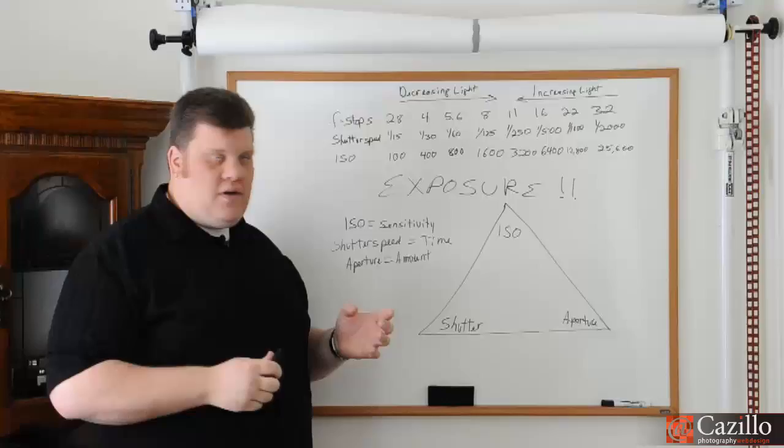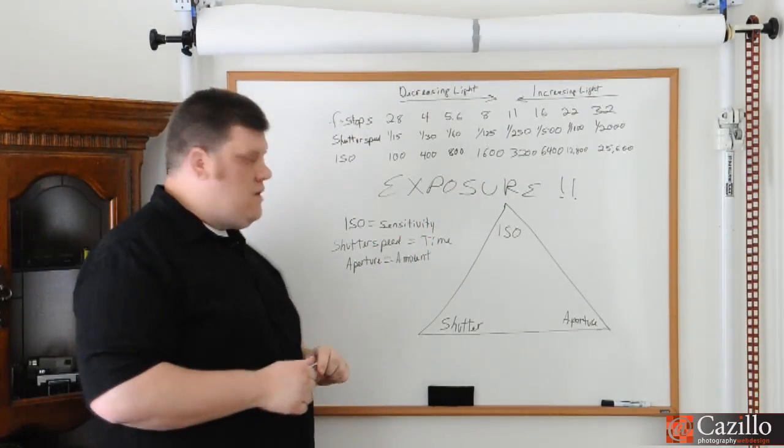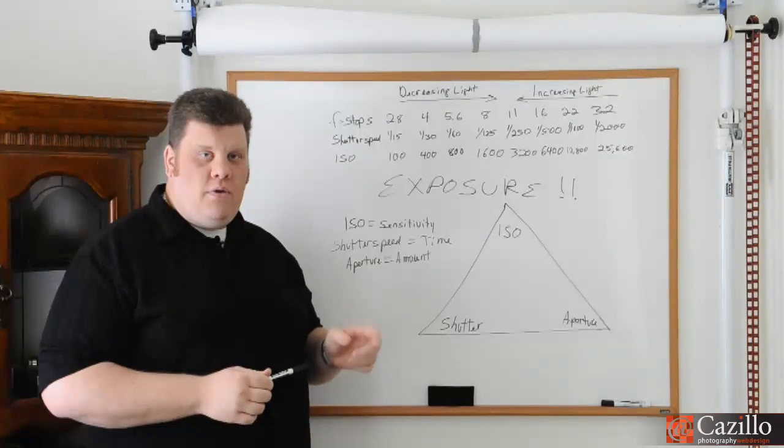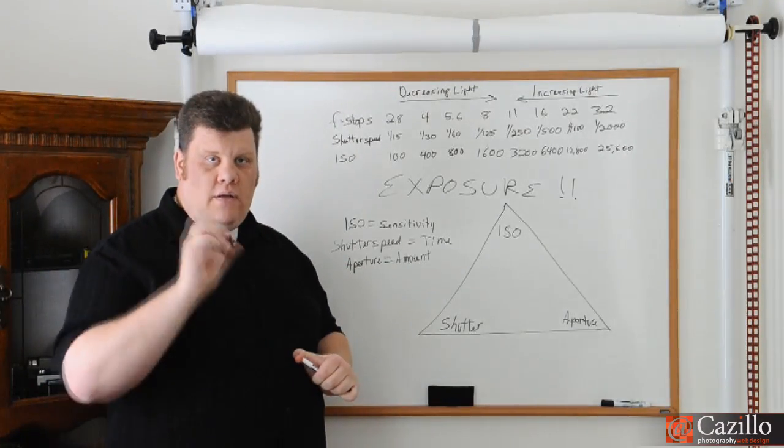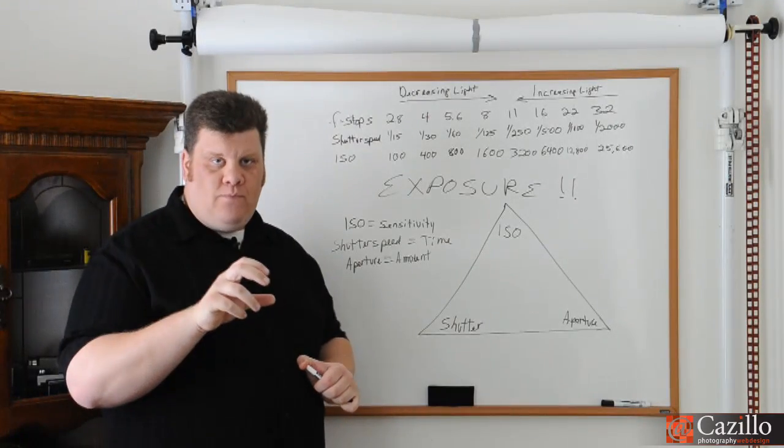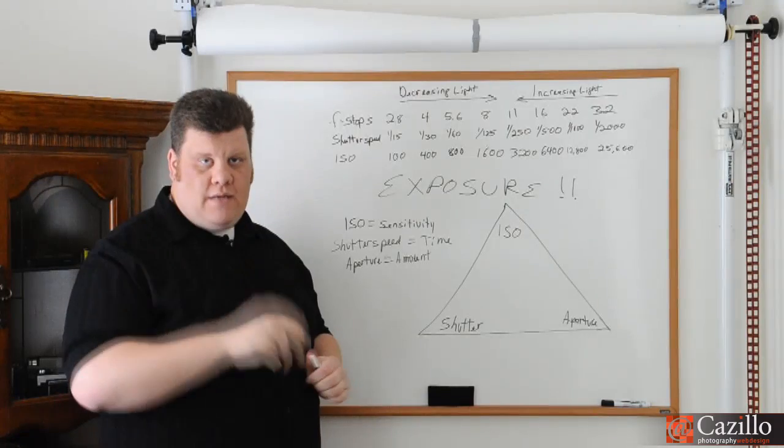It's still that same sensitivity. And there are our primary settings right there. Then we have the shutter speed, which is the amount of time that the shutter is open and the amount of time that you're actually gathering light. So that shutter opens and closes, allowing light to pass and actually hit that sensor.